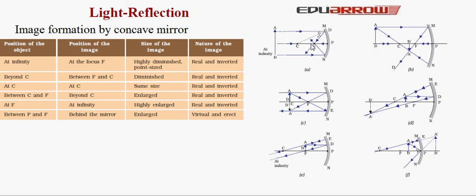When the object is beyond center of curvature but not at infinity, the image is formed between focus and center of curvature. The size of the image is diminished. The object AB is placed beyond center of curvature; the light rays parallel to the principal axis meet between center of curvature and focus, and the image formed is diminished and real and inverted.